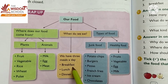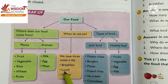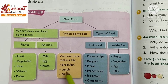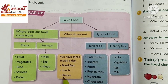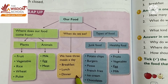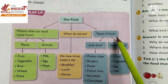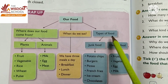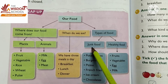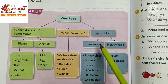One is breakfast in the morning. The second one is lunch, which we eat in the afternoon. And dinner at night. Then we have different types of food: one is junk food and the second one is healthy food.